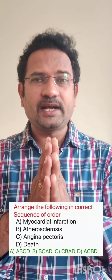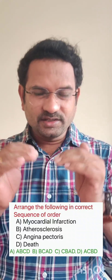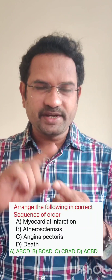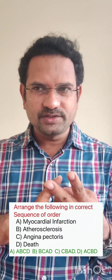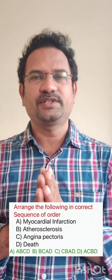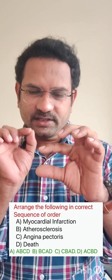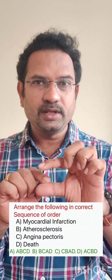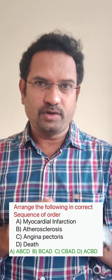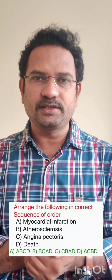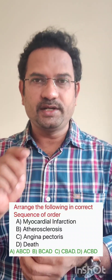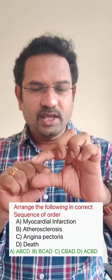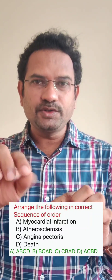The next question: arrange the following in the correct sequence. The diseases given are myocardial infarction, atherosclerosis, angina pectoris, and death. When LDL (low density lipoprotein) accumulates in blood vessels, blood flow to the heart is blocked — usually in the coronary arteries, hence called coronary artery disease. LDL deposition in coronary arteries leads to the condition known as atherosclerosis.